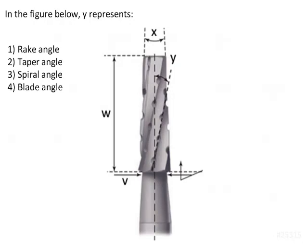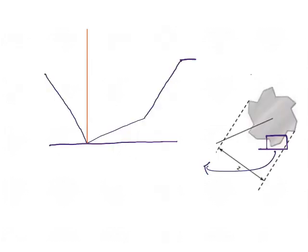In the figure below, y represents a specific angle. Before discussing this, I should explain the important concepts of the blades of the burr. If we consider this as the cross section of the burr, I will enlarge a single blade here to show its key features.